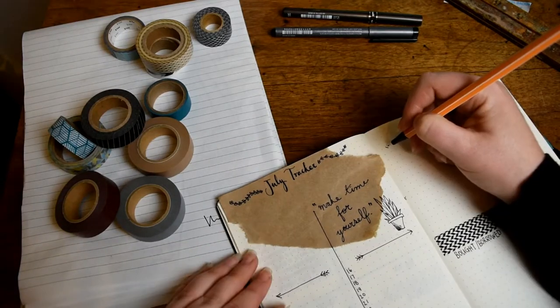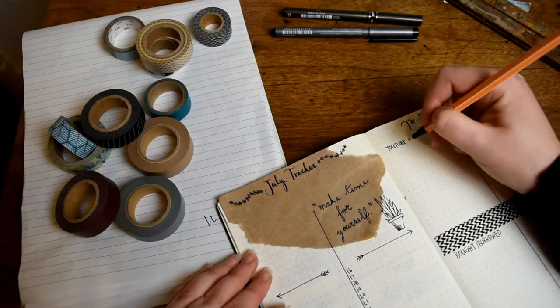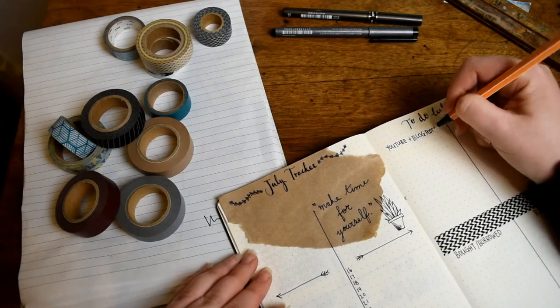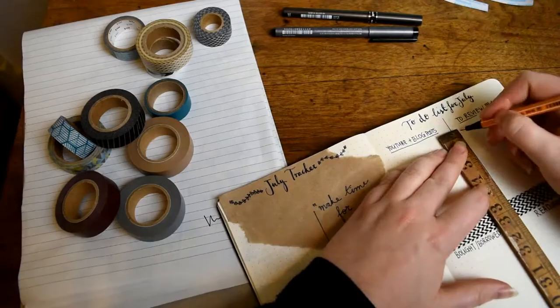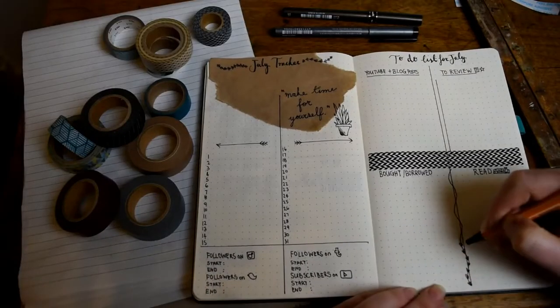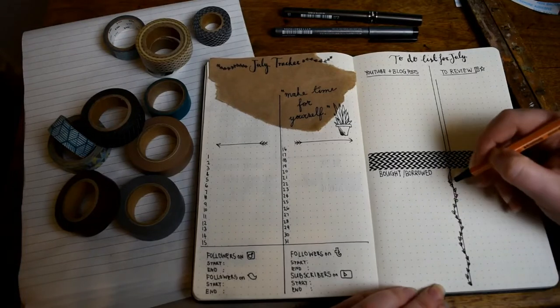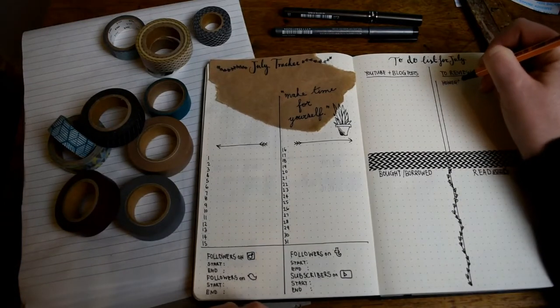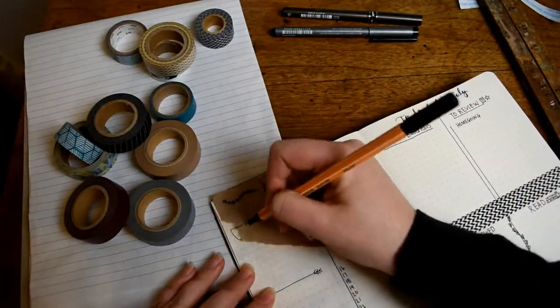This month I decided to add on the right-hand page a tracker for what books I need to review and which YouTube and blog posts I actually made onto my channel and onto my website. I create a little column in the to-review section and I use that to color in each review that I have completed.